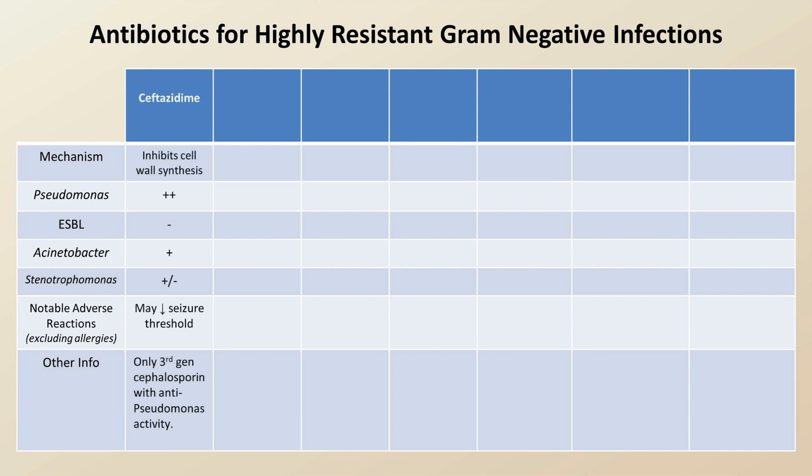Ceftazidime inhibits cell wall synthesis. It is great against Pseudomonas with some activity against Acinetobacter and unreliable activity against Stenotrophomonas. Notable adverse reactions include the possibility that it lowers seizure threshold. It's the only 3rd generation cephalosporin with anti-pseudomonal activity. Cefepime, a 4th generation cephalosporin, also inhibits cell wall synthesis. It's active against Pseudomonas and a little against Acinetobacter. Cefepime also lowers seizure threshold and interestingly can cause a positive Coombs test without triggering hemolysis.